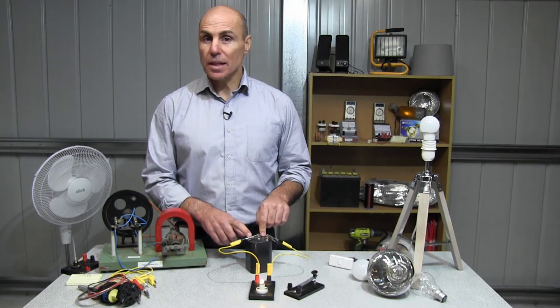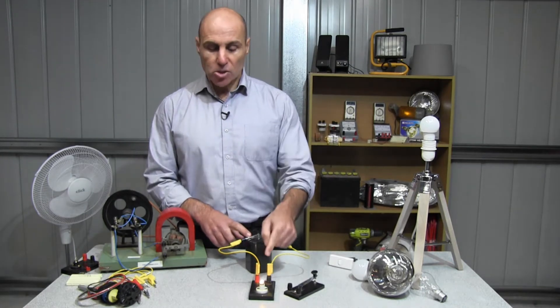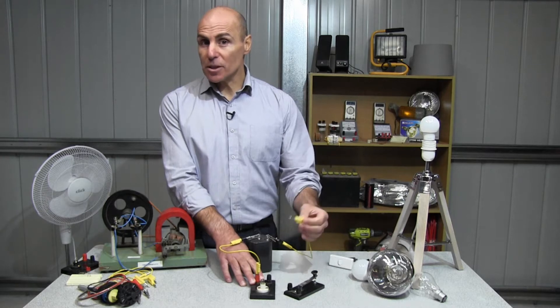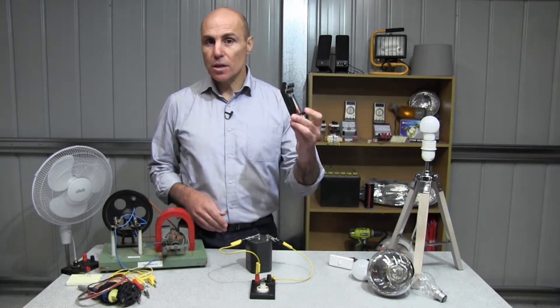So this is the simplest electric circuit you can get. To turn the light globe off, I can just disconnect the wire, but there's a much better way. I can use a switch.